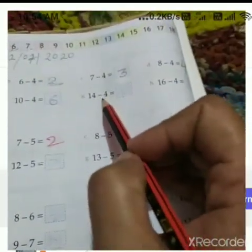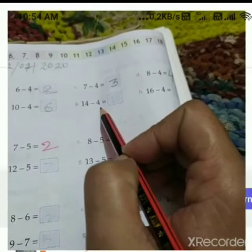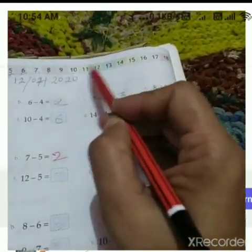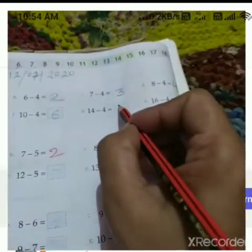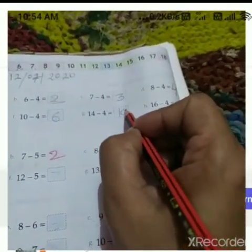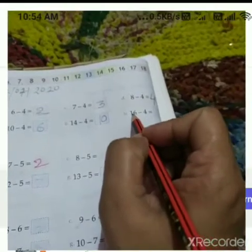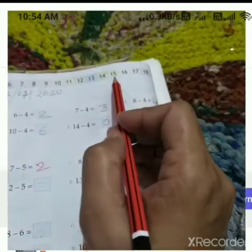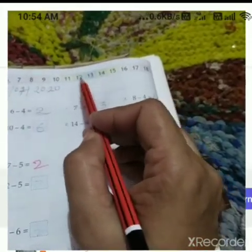14 minus 4. We will go 4 numbers back: 1, 2, 3, 4. We got 12.